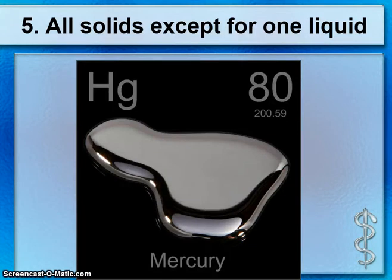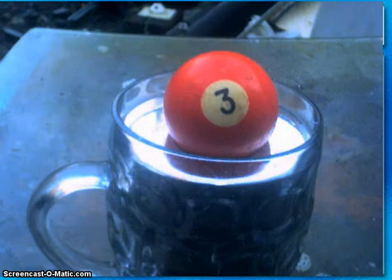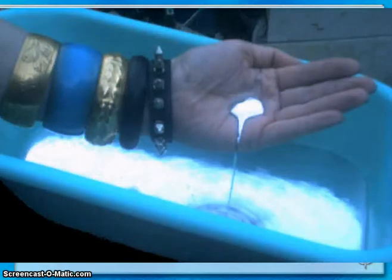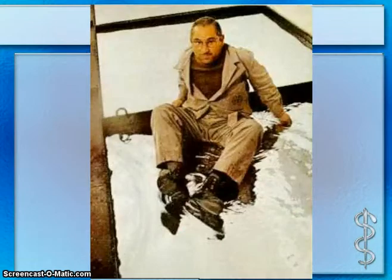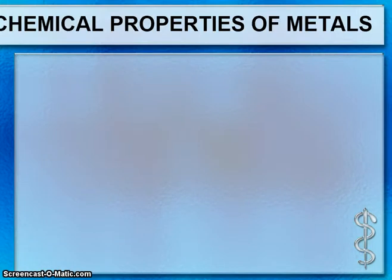Mercury is a liquid, making it the only liquid metal on the chart at room temperature. Mercury is very dense — its density is around 13 — so very heavy objects can float on it. Here's a scientist handling mercury, which you shouldn't do because mercury is a dangerous substance to breathe in. You can even see a person sitting on mercury because their density is much less than mercury's.